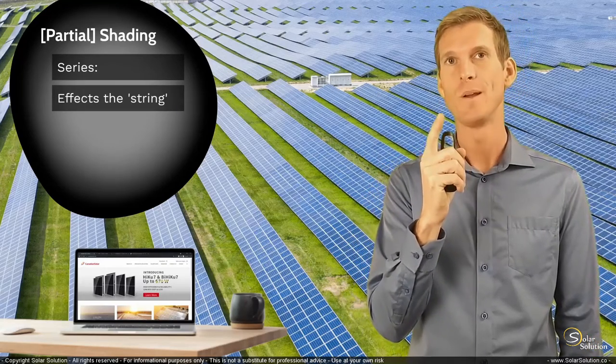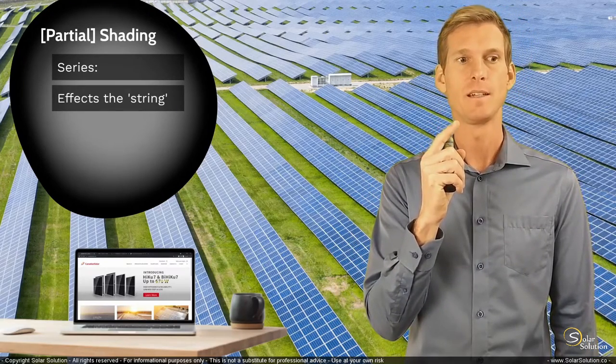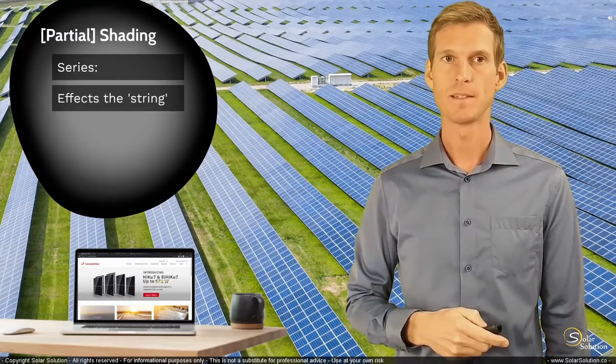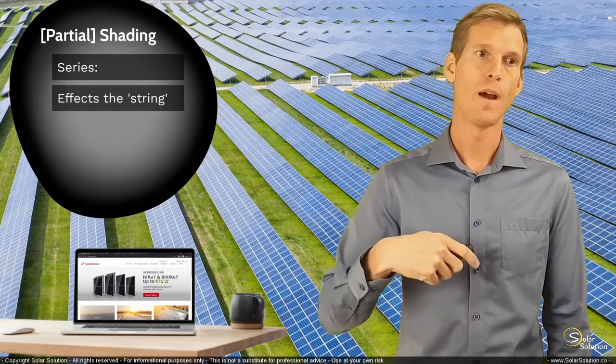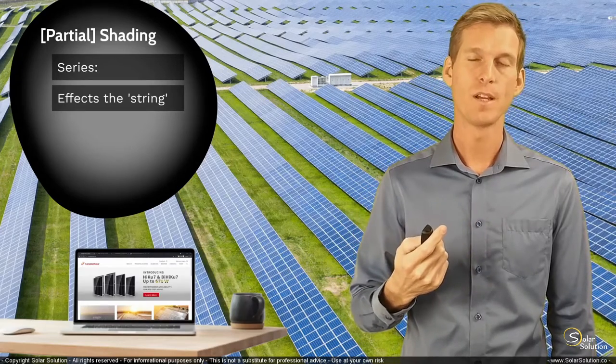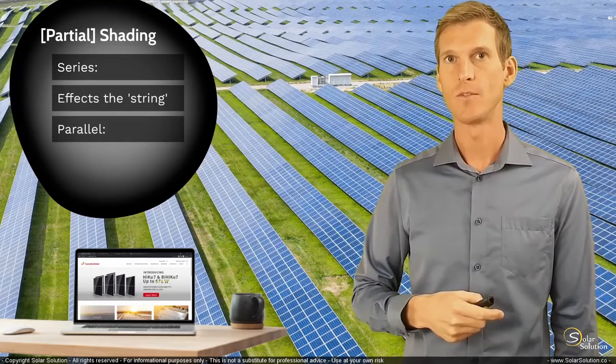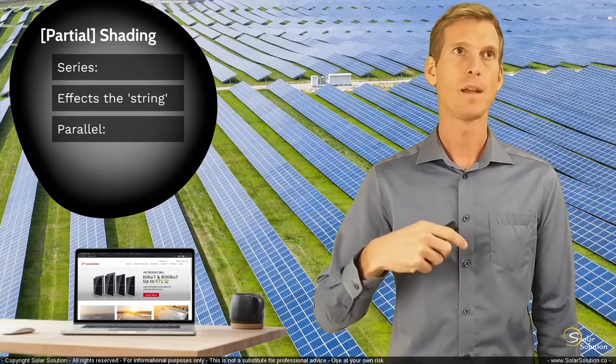Everything that is connected in series, if there's only one cell or module that has a lower performance, the complete string is heavily impacted. Opposite to that, if you wire your panels or cells in parallel and you have local low performance, shading, or damage, then the impact is much lower.